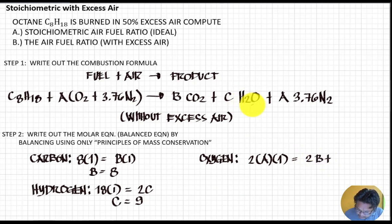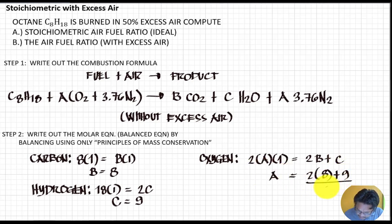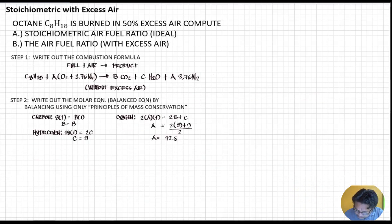Substituting the known values of b and c into the oxygen balance: 2a equals 2b plus c, so a equals (2 times 8 plus 9) divided by 2, which gives us a equals 12.5.